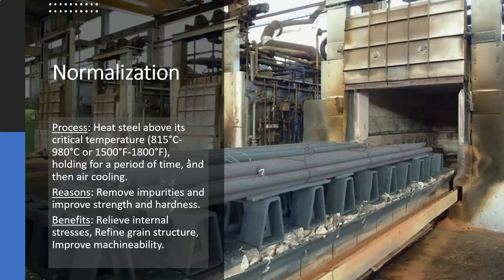Normalization is a thermal conditioning process where we heat the steel above its critical temperature — typically about 1500 to 1800 degrees Fahrenheit — hold it for a period of time, and then air cool it. This helps to remove impurities and improve strength and hardness. The benefits are that it relieves internal stresses, refines the grain structure, and improves machinability.